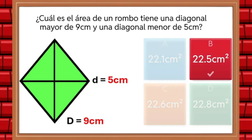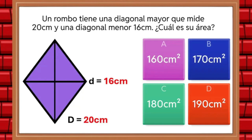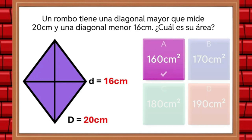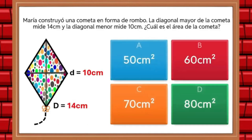Consider the following question: a rhombus has a minor diagonal measuring 16 centimeters — what is its area? Next, let's look at the following exercise: Maria built a kite in the shape of a rhombus. The major diagonal of the kite measures 14 centimeters and the minor diagonal measures 10 centimeters. What is the area of the kite? The answer is 70 square centimeters.